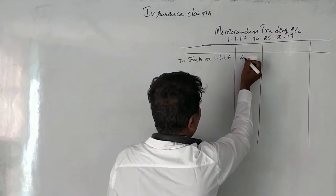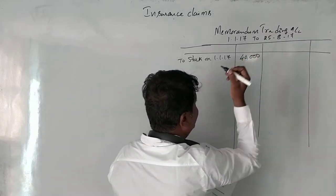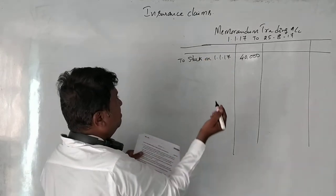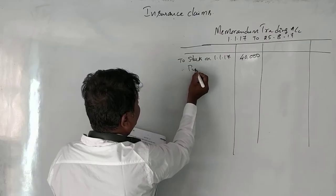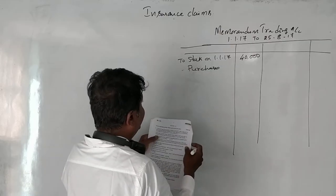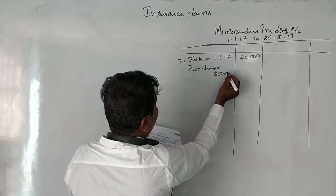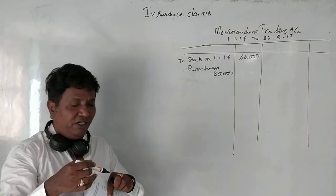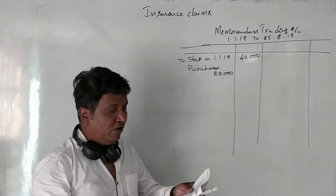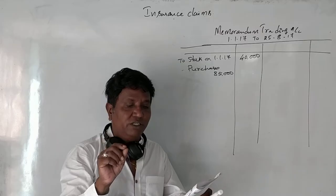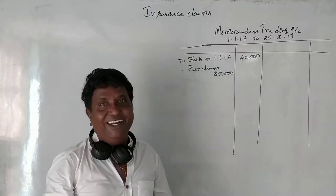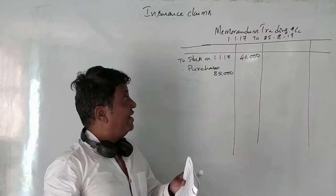The cost price of the stock on 1/1/2017 was ₹40,000, so we enter ₹40,000 as opening stock. Next, purchases: ₹85,000. Also note that goods costing ₹5,000 were taken by Aditya for personal use, so this will be deducted.